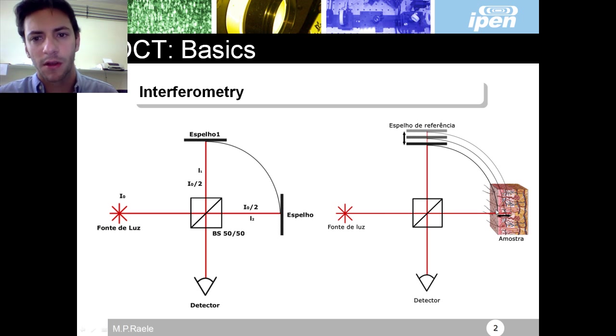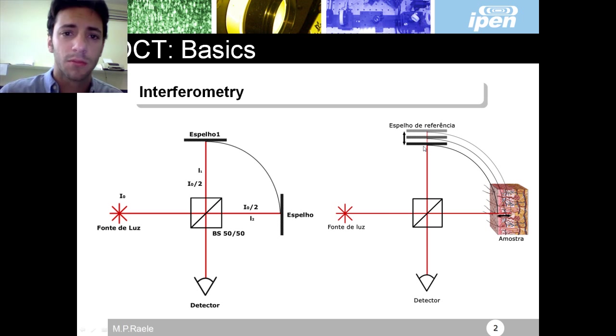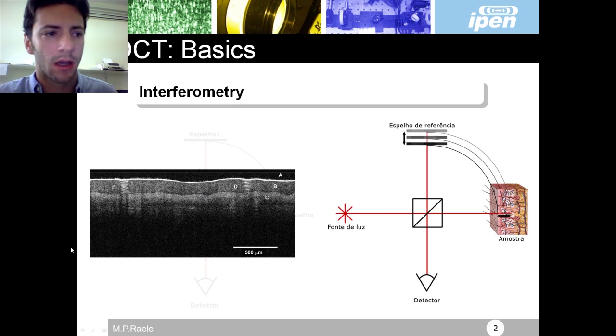Tune my reference arm to have the same optical path that my first surface has, and then I will get a signal that is proportional to this backscattering. And then if I want to see inside my sample, I will just move a little bit farther my reference mirror, and then I will get scattering information about the layer that is inside my sample.